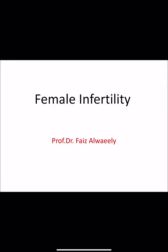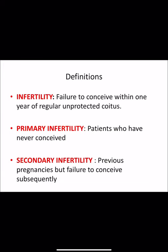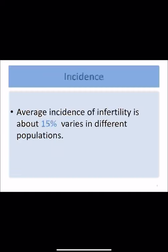Today we talk about female infertility. By definition, infertility is failure to conceive within one year of regular unprotected intercourse — meaning no use of any method of contraception. Infertility can be either primary infertility, including patients who have never conceived, or secondary infertility, including patients who have had previous pregnancies regardless of outcome but fail to conceive subsequently. The incidence of infertility is about 15% and varies according to the population.